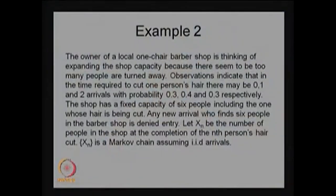The future distribution given the present as well as the past information is the same as the future distribution given the present, not the whole past information. This Markov property is satisfied by this stochastic process, therefore Xn will form a discrete time Markov chain — and it is also a time-homogeneous discrete time Markov chain.